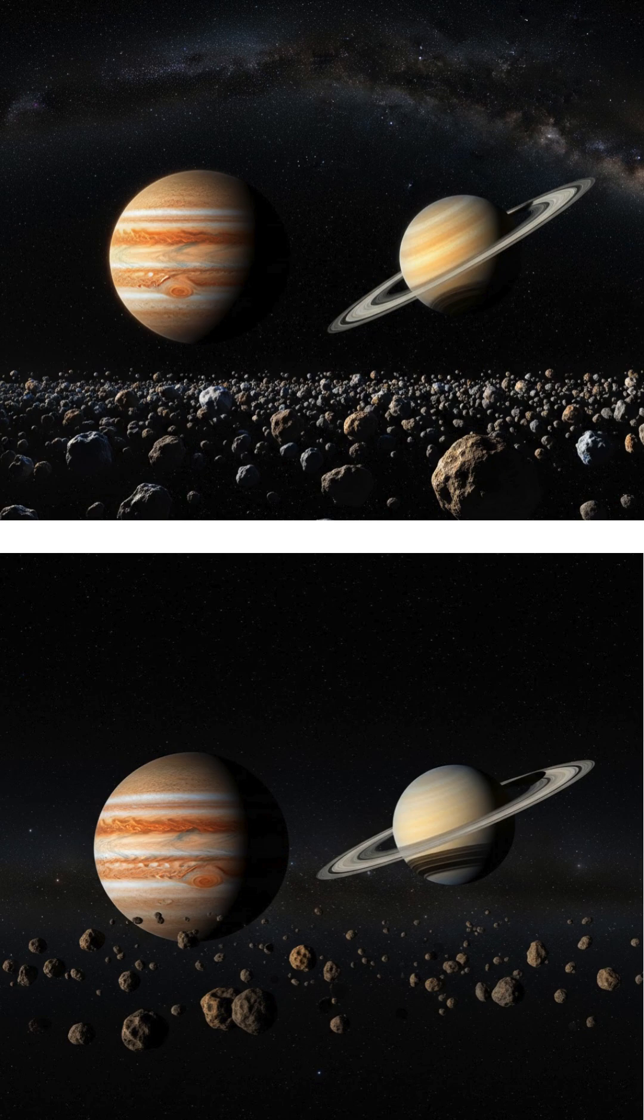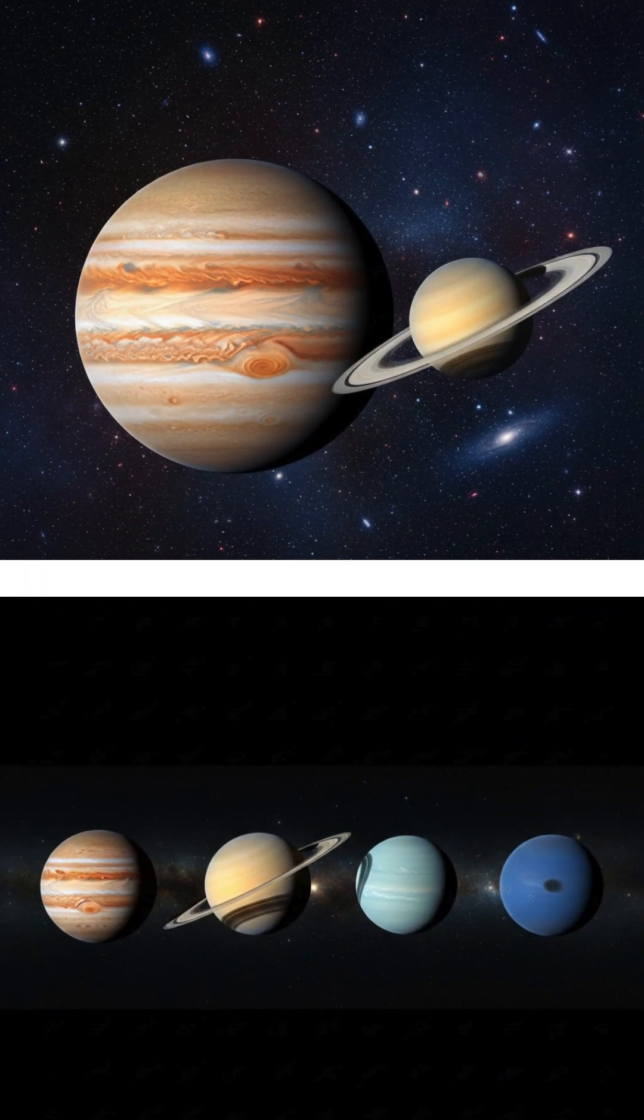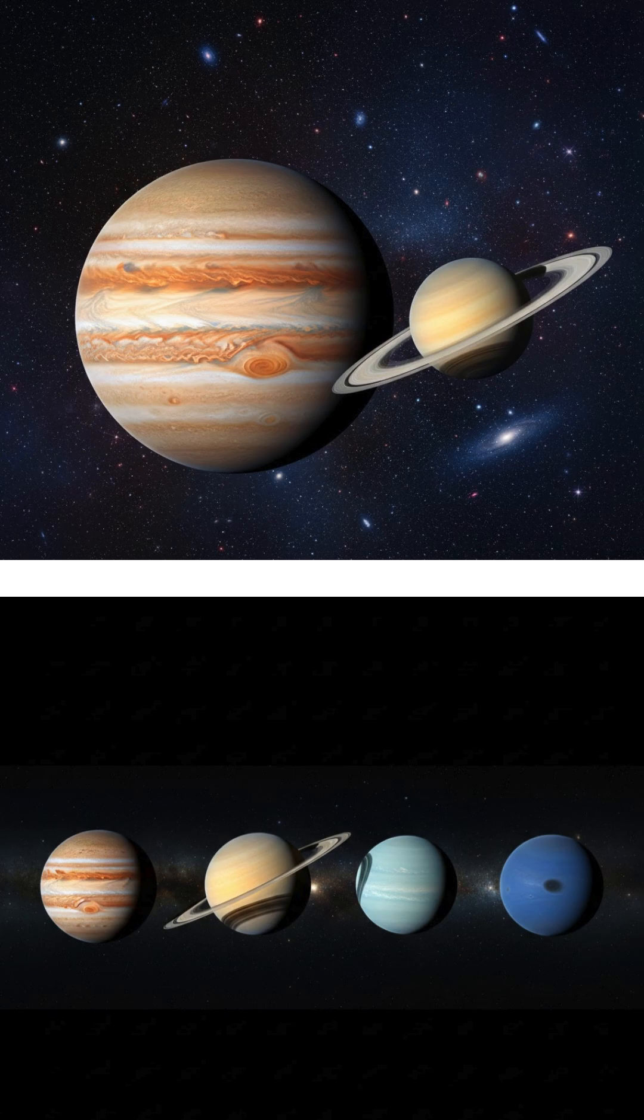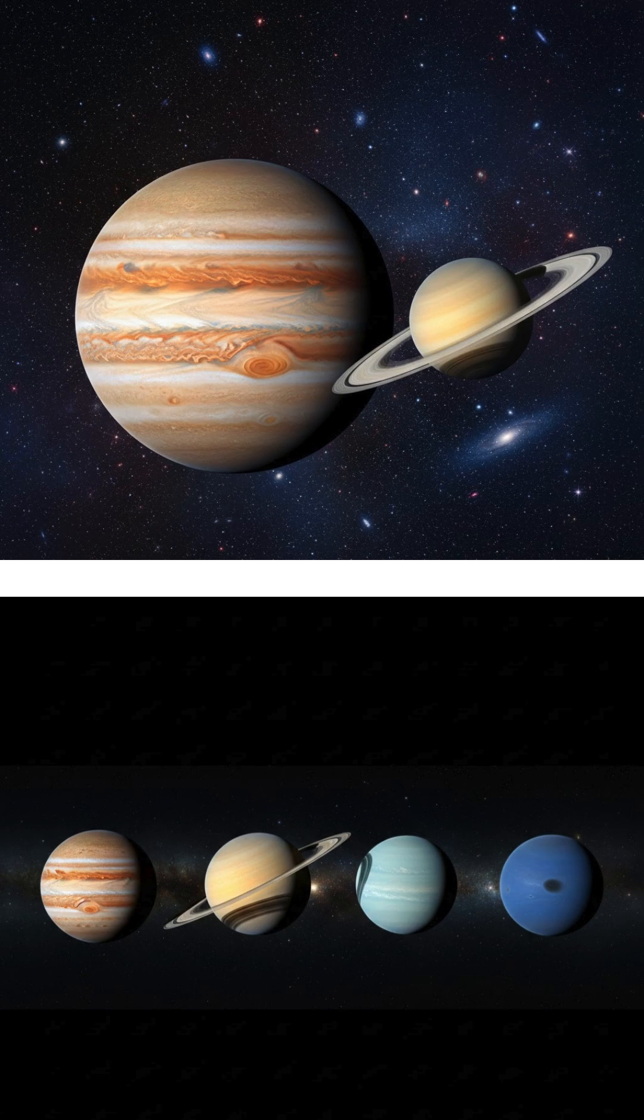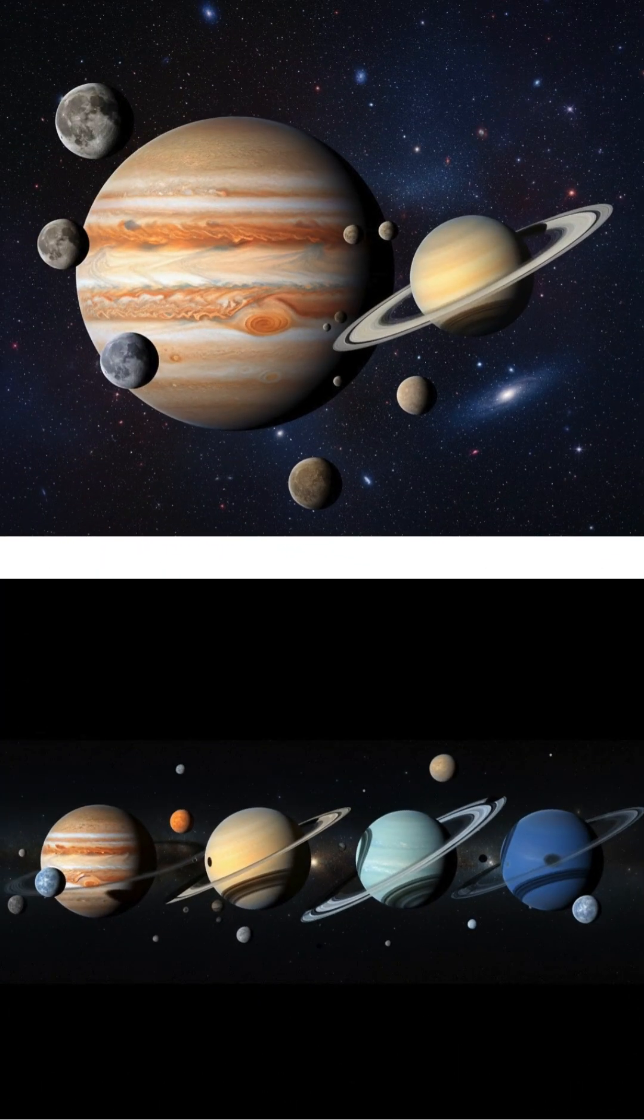Beyond the belt reside the two gas giants, Jupiter and Saturn. These are the solar system's largest planets, primarily composed of hydrogen and helium, with no solid surface. They are known for their spectacular ring systems and their large families of moons.